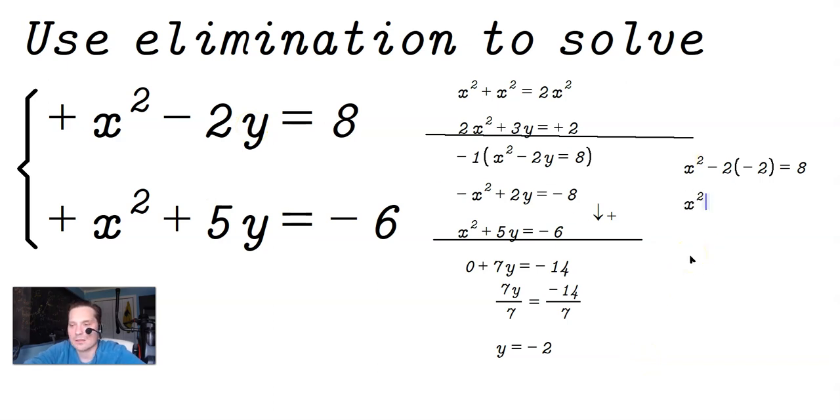So I have x squared plus 4 is equal to 8. And then it's going to give me x squared is equal to 8 minus 4. So then I will have x squared is equal to 8 minus 4, which is 4.